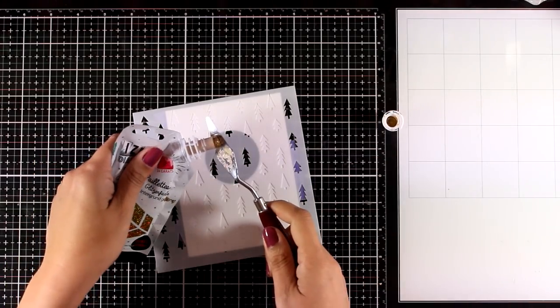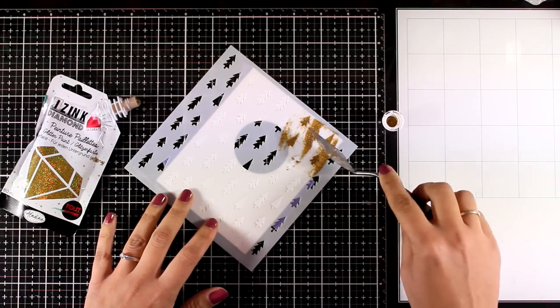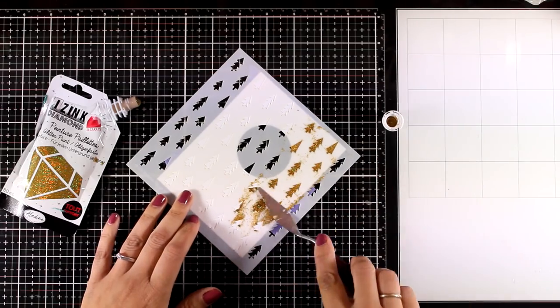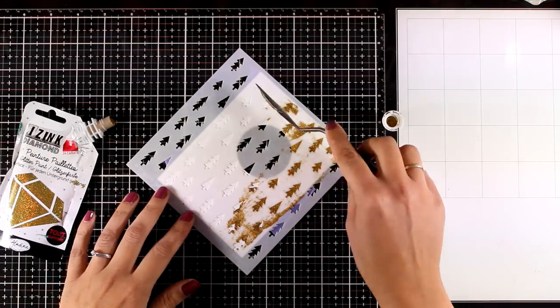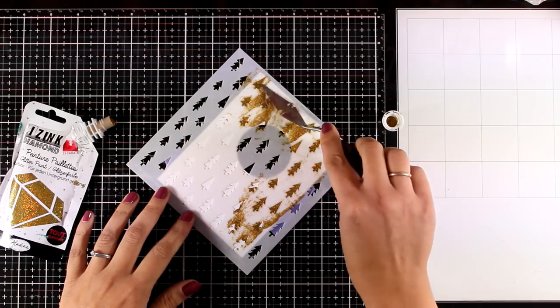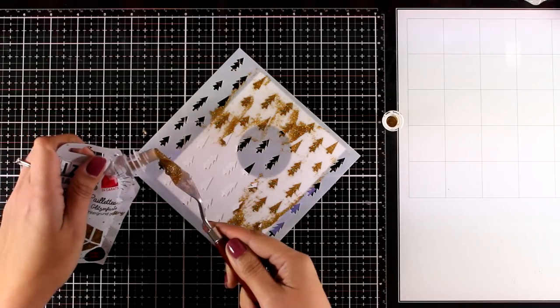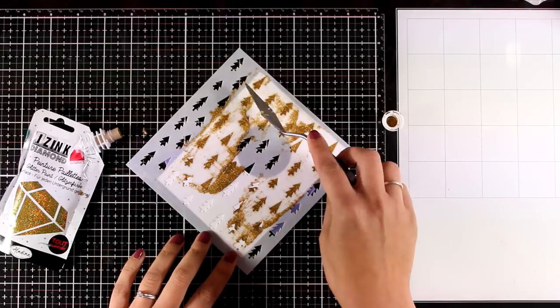Now at the front I'm going to use this Izink Diamond 24 Carats glitter paste. It is the gold one and it is just stunning. I'm going to apply it with my spatula all over the place. I did a review of these pastes last week so you can watch that video if you haven't. I absolutely love these pastes for two reasons.